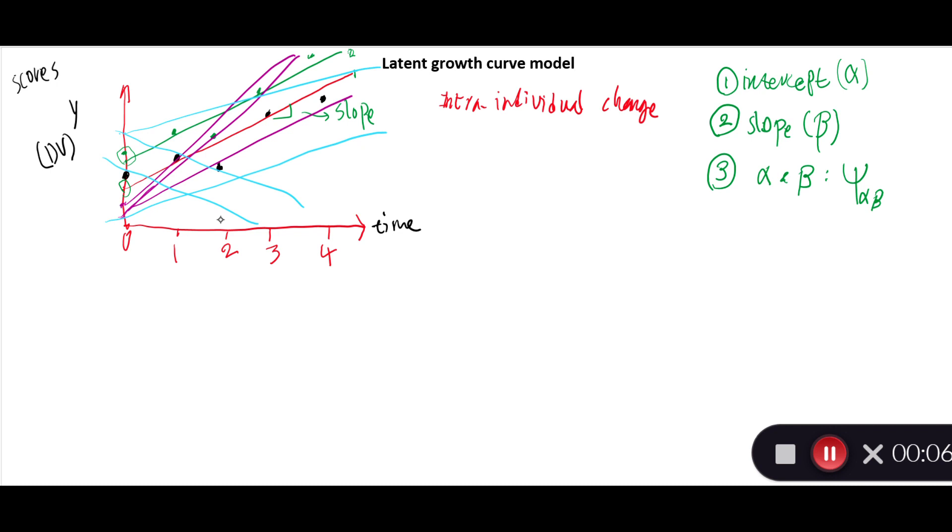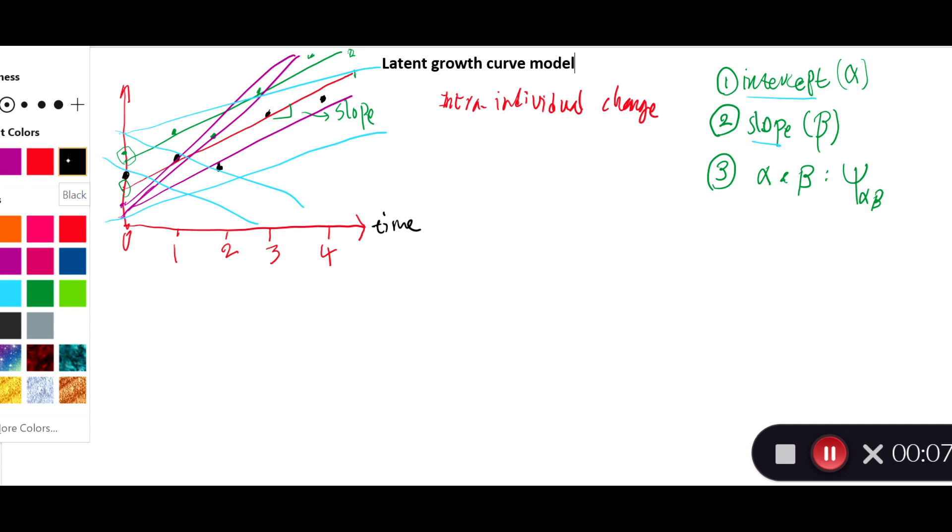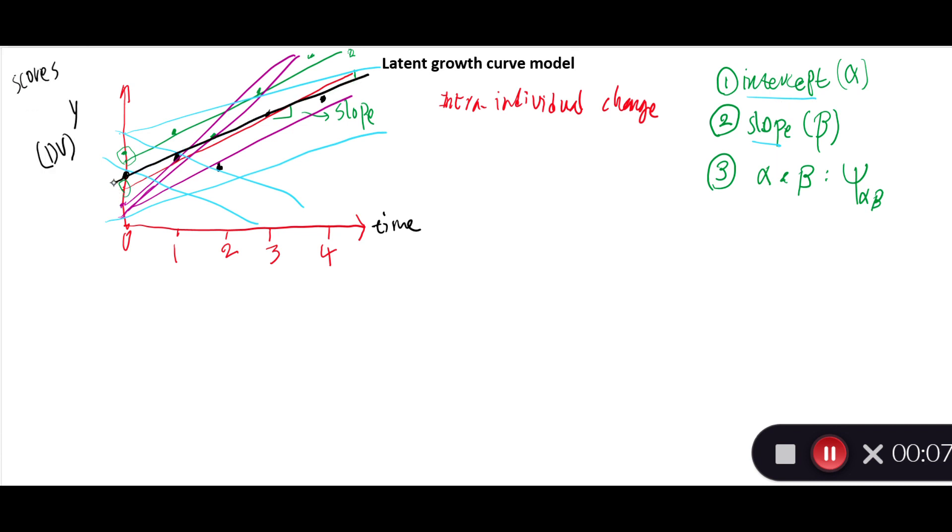We can add these trajectories up and calculate the mean score for the intercept and the mean score for the slope. So that becomes the inter-individual change. I'm going to represent these two concepts—the grand mean of the intercept, the grand mean of the slope—with this line. Let's say here.